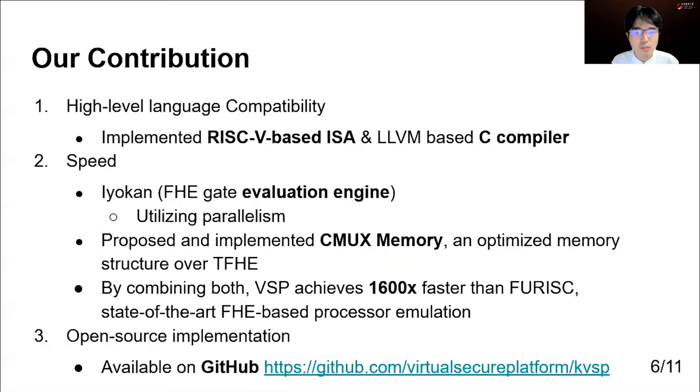Our contribution to making VSP compatible with high-level language is to implement a RISC-V-based ISA and LLVM-based C compiler for it. The reason why we chose C is it is widely used and easy to write speed-optimized code. The reason why we chose RISC-V-based ISA is we want to use a widely used compiler framework like LLVM to make the compiler user-friendly.